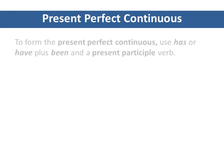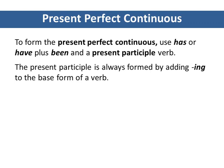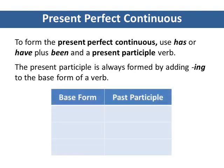To form the present perfect continuous, use has or have plus been and a present participle verb. The present participle is always formed by adding -ing to the base form of a verb. For example,